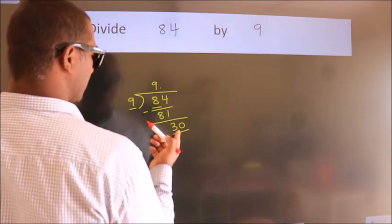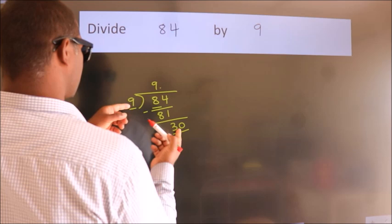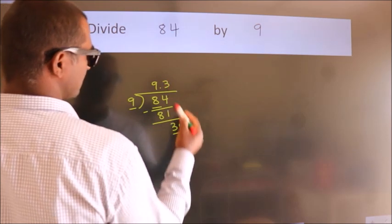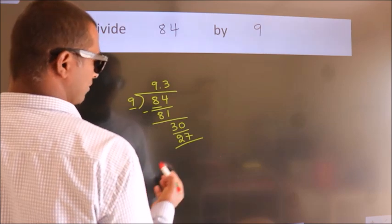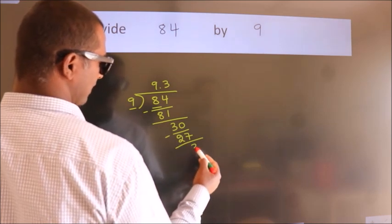A number close to 30 in the 9 table is 9 threes, 27. Now we subtract. We get 3.